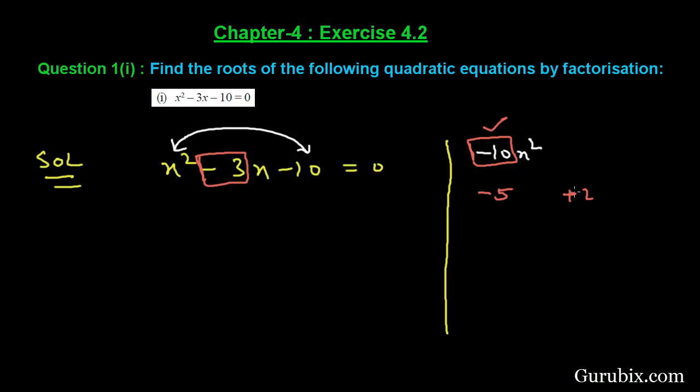We shall write x with those two factors. So we have split the middle term into -5x and +2x. The first term and the last term remain the same.